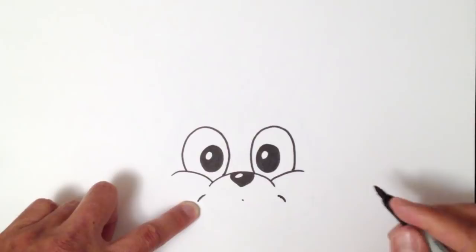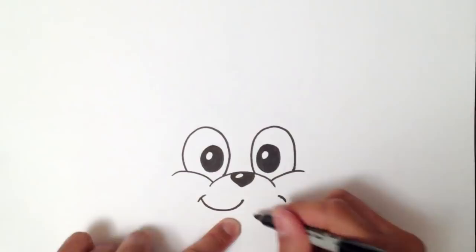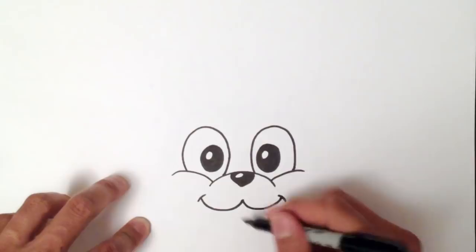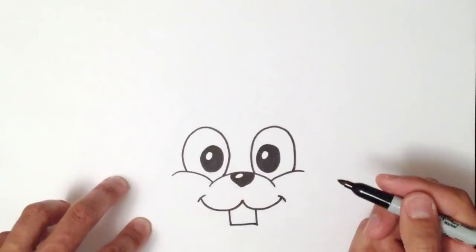Then I'm going to draw a curve on one side and a curve on the other. And I'll take that and I'll create a swoop into that point. I'll do the exact same thing on the opposite side. That creates the mouth. And then I'm going to create a square for his teeth.